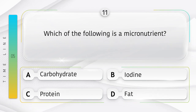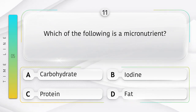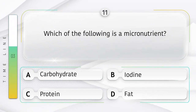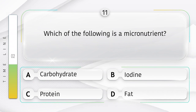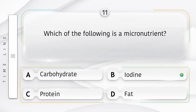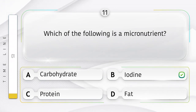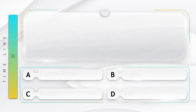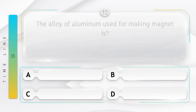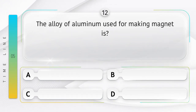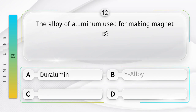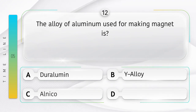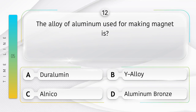The alloy of aluminium used for making magnets is: option A: Duralumin, B: Y-Alloy, C: Alnico, D: Aluminium Bronze. Answer is option C, Alnico.